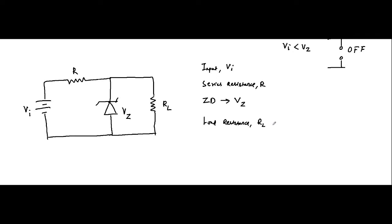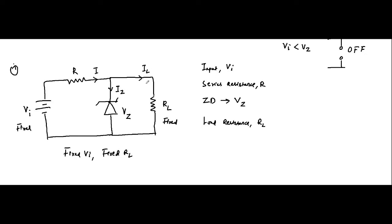We can get the circuit in different ways. This circuit diagram is when the input voltage is fixed and the load resistance is fixed — fixed input, fixed load. That is Case 1. In that case, we will have a source current flowing through the series resistance, then there will be a Zener current, then there will be a load current. We can be asked to find different parameters: the input voltage, IS, IZ, breakdown voltage VZ, RL, IL, or anything.